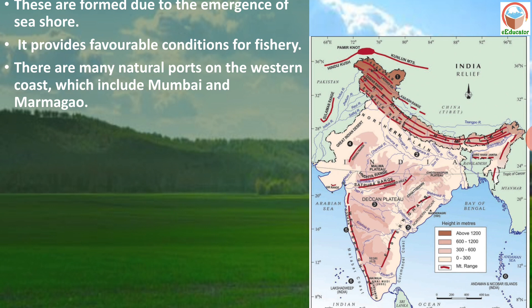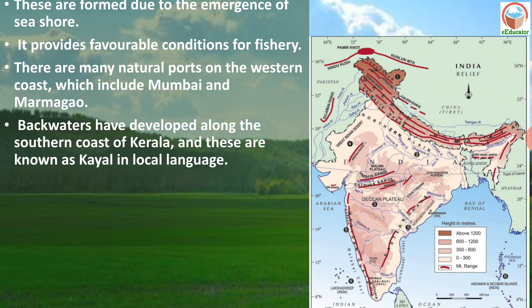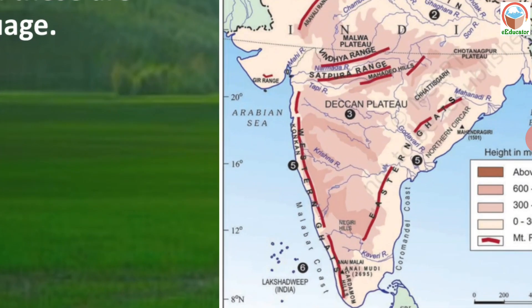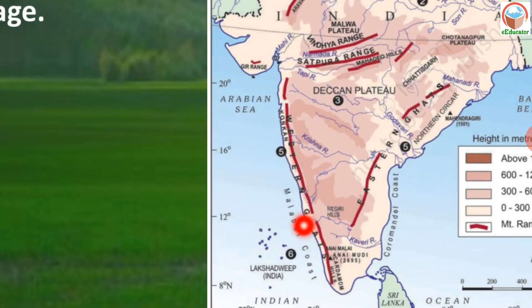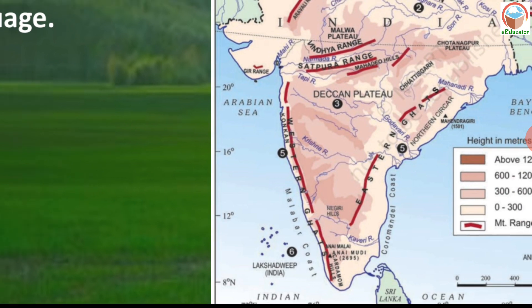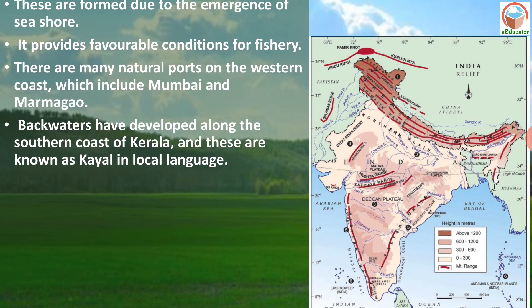Backwaters are a significant feature along the southwest coast of Kerala. They are locally known as 'Kyal' in the Kerala language. These are formed where the river water mixes with the Arabian Sea through estuaries, creating these unique water bodies along the Malabar coast.